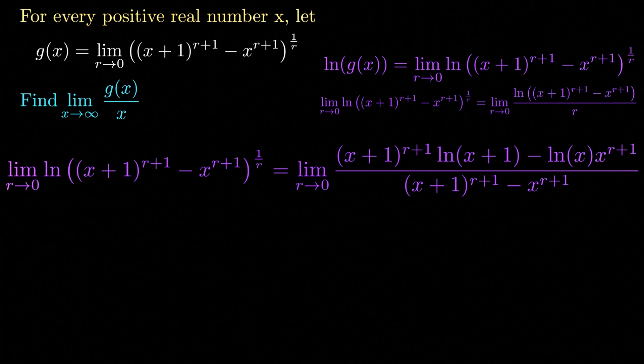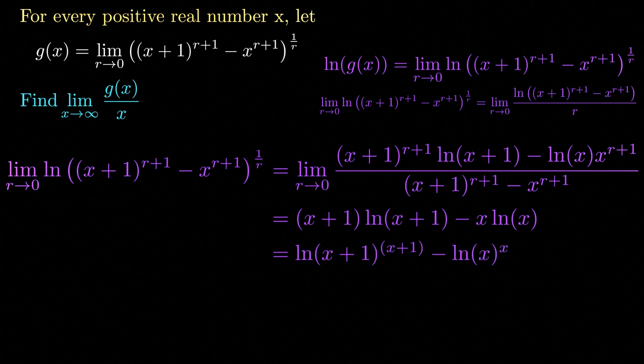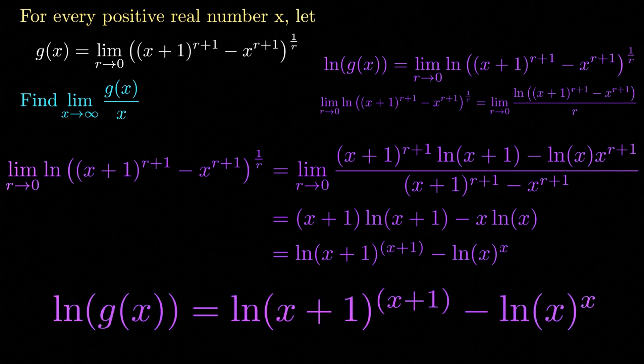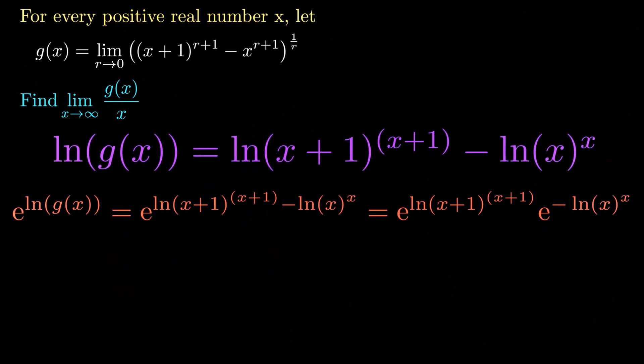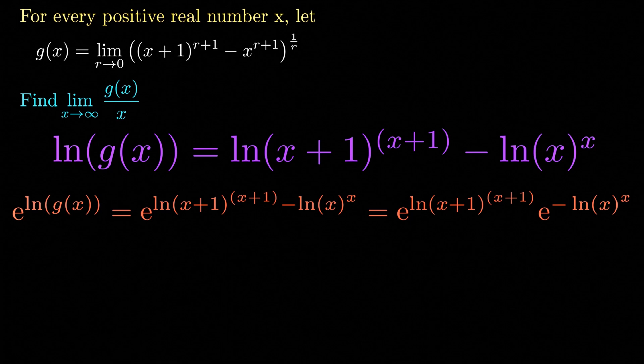Letting r tend to 0, we're left with x plus 1 times the natural logarithm of x plus 1, minus x times the natural logarithm of x. Using the power rule for logarithms, we rewrite this as the natural logarithm of x plus 1 raised to x plus 1, minus the natural logarithm of x raised to x. So the natural logarithm of g of x equals the natural logarithm of x plus 1 raised to x plus 1, minus the natural logarithm of x raised to x. Raising both sides to e gives us g of x expressed in terms of exponentials.